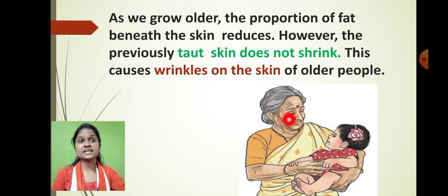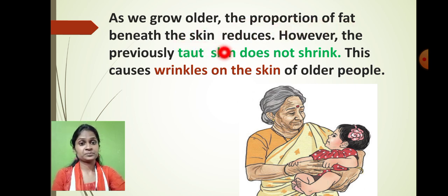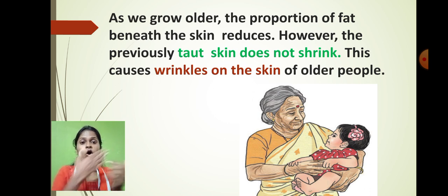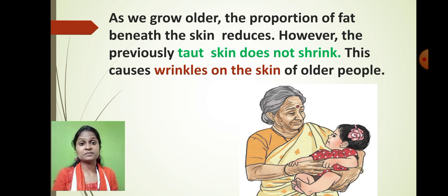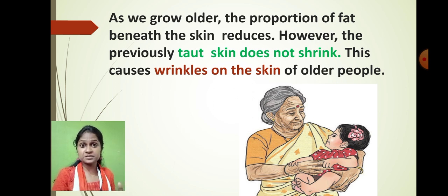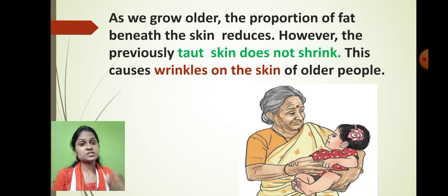As the person gets older and older, the proportion of the fat beneath the skin gets reduced. When the layer of fat reduces in our body, the skin gets shrunken. On our skin level there is a deposit of fat, but when the fat layer decreases, the skin becomes shrunken. This is a major difference between older people and younger people — in older people we see wrinkles on the skin, and in younger people the skin is very tight because the fat layer reduces in older people.